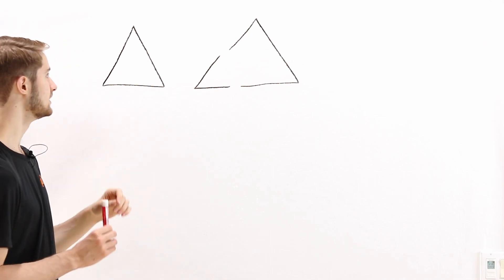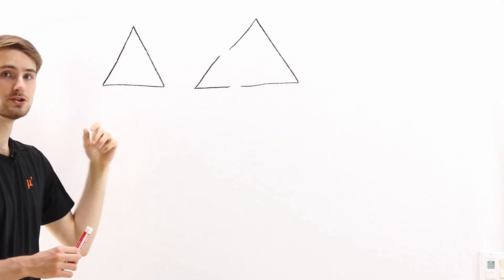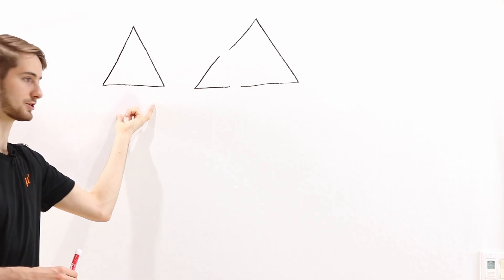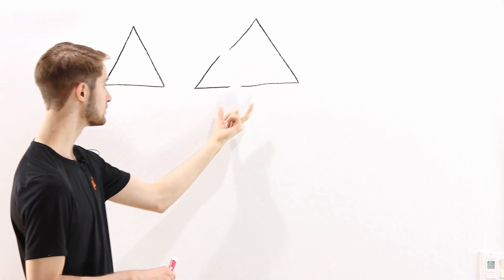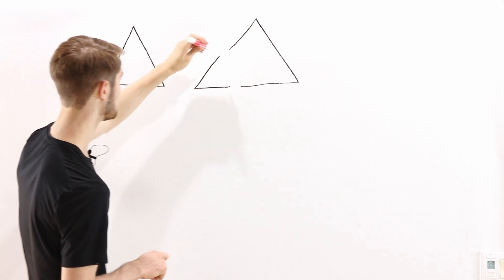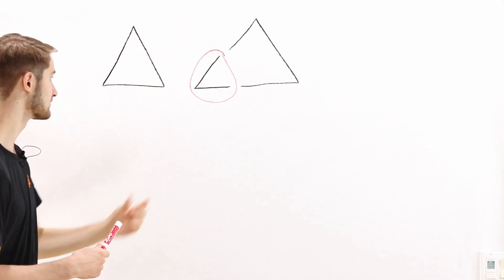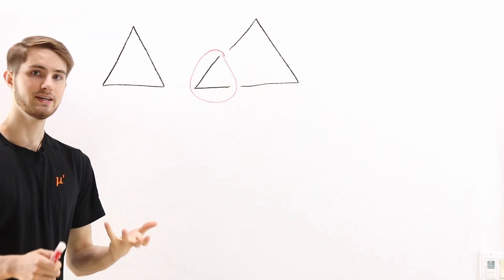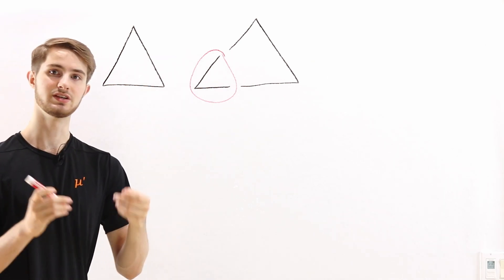The idea of connectedness is whether we can split a topological space into two separate parts. The triangle on the left is a connected topological space because there's no way to split it up. But the triangle on the right with openings is not connected, because we can separate it into two different parts.